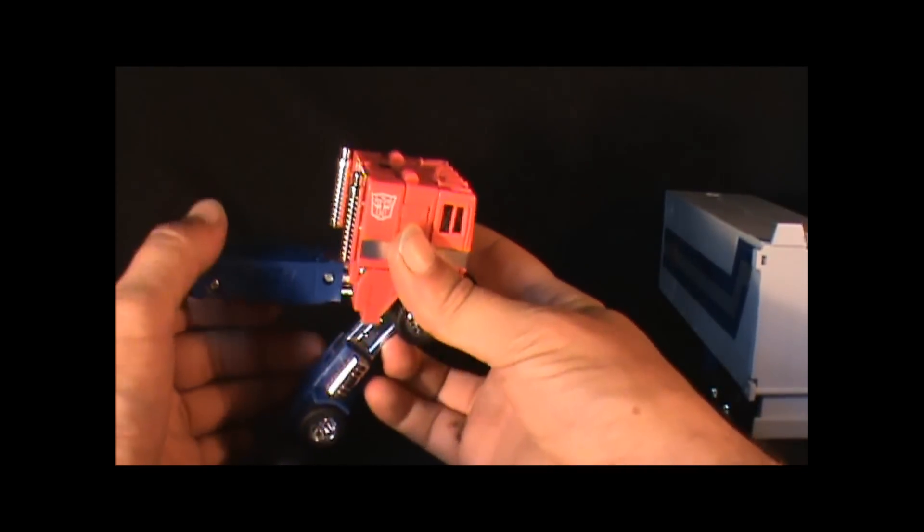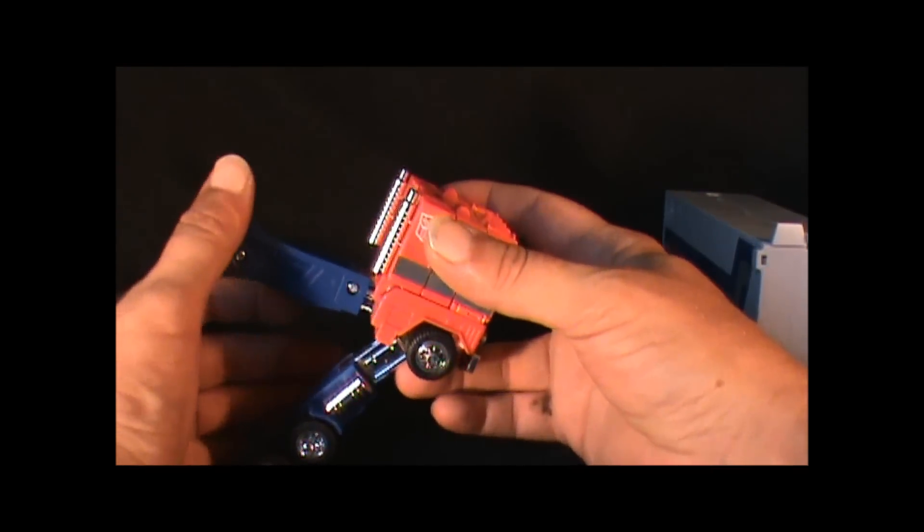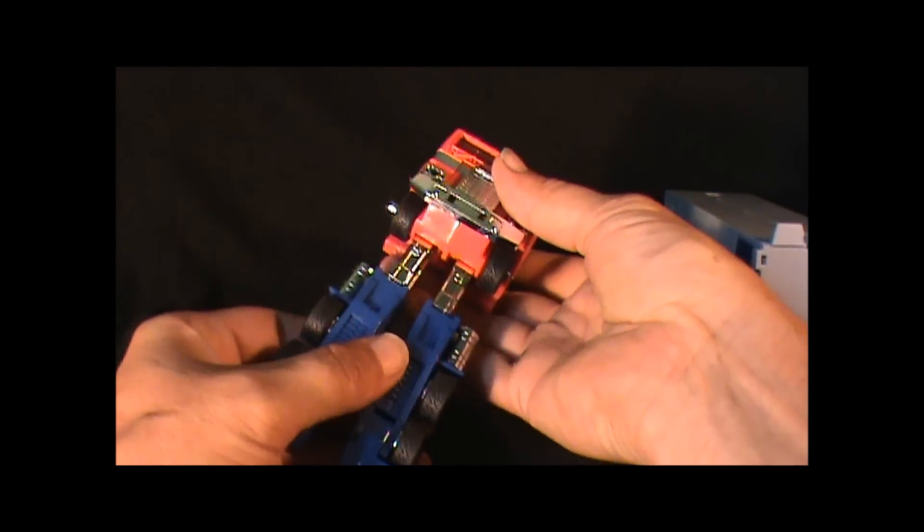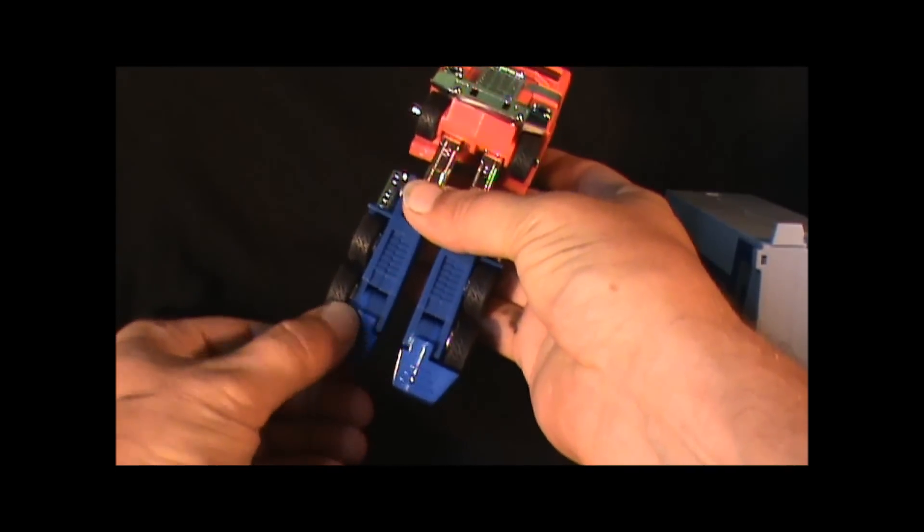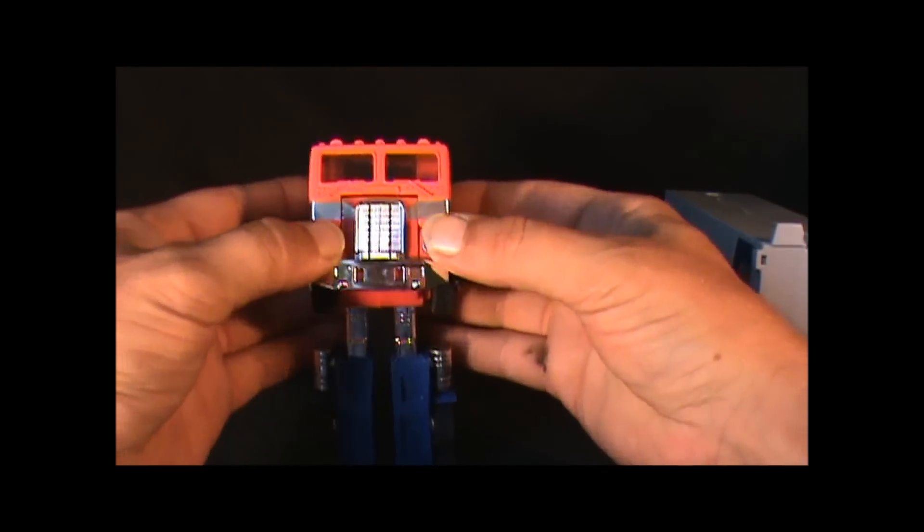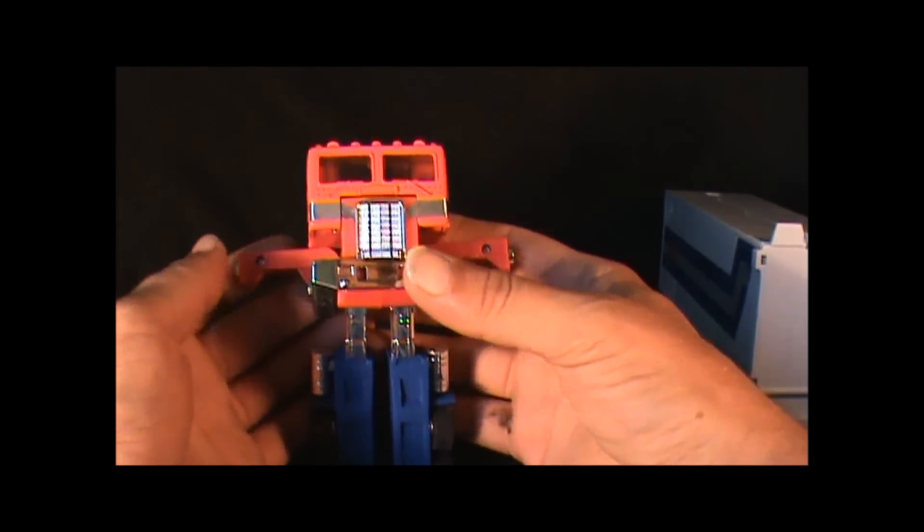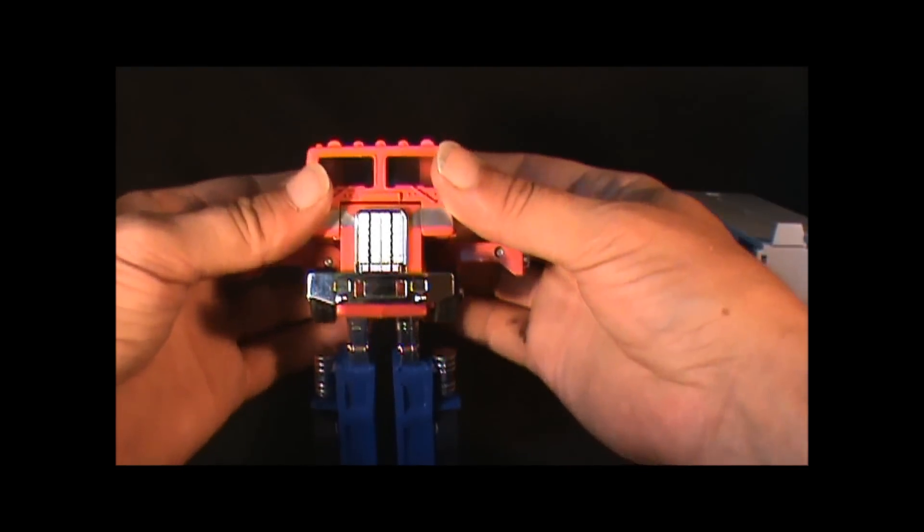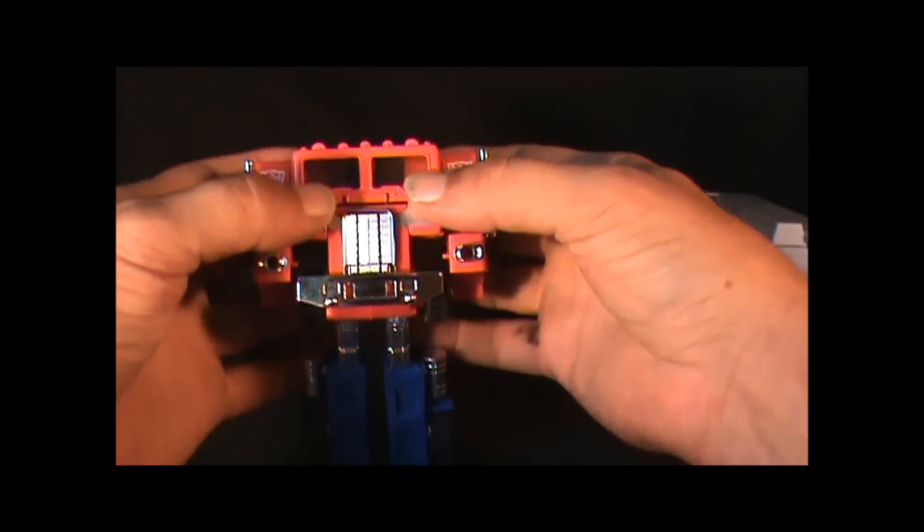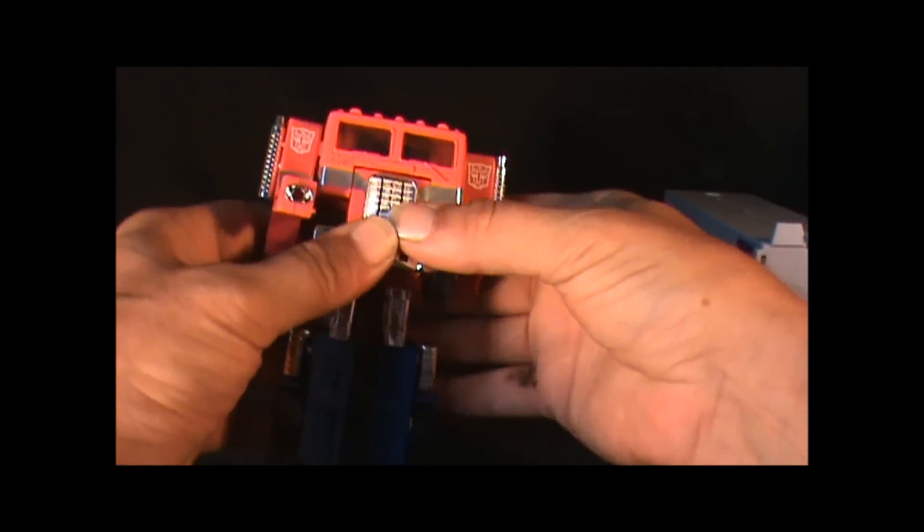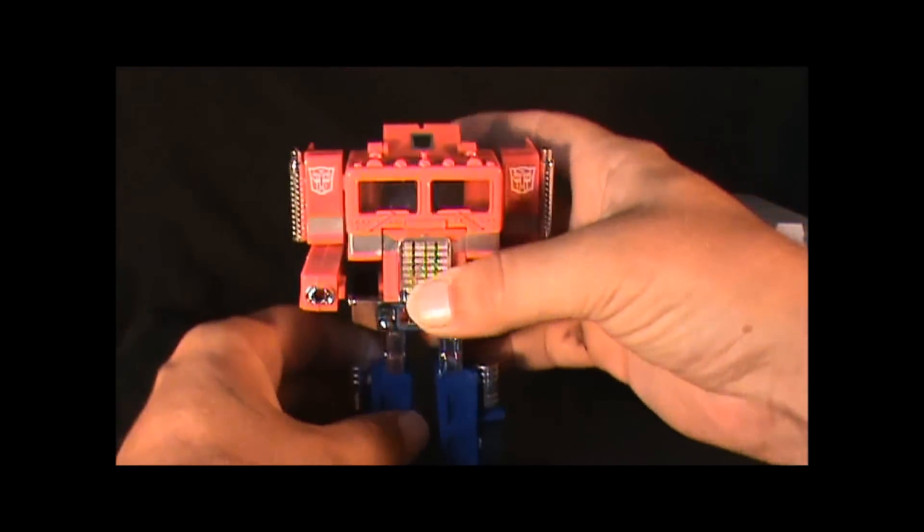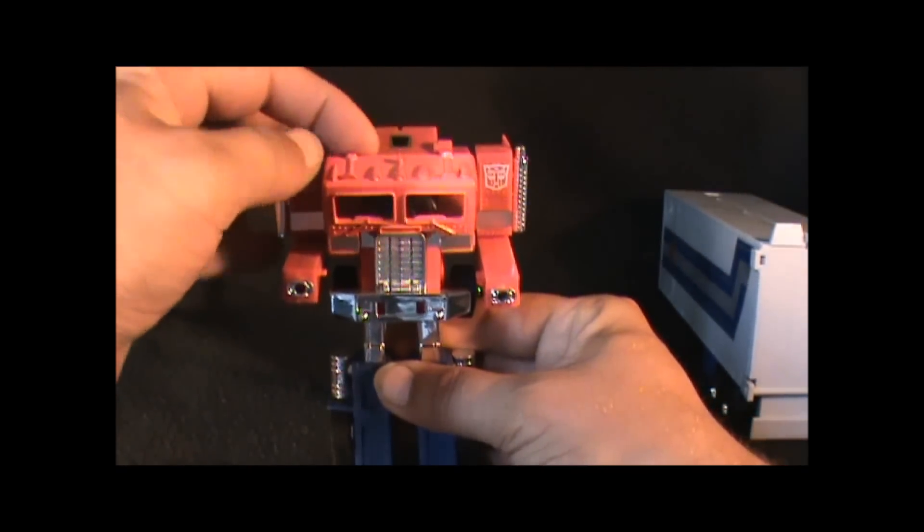All right, first up you pull the leg down. I always do it one leg at a time that way don't break. But you pull the legs down just like that, pull the feet out, then you pull these forearms out like that, and grab back here on the exhaust pipes and just pull the arms out.